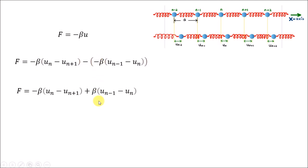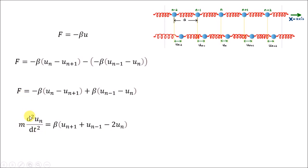Since both forces are opposing each other, we put a negative sign, which makes the expression positive. Working with the expressions, we can apply Newton's second law of motion to write F = m d²u_n/dt². This is a linear second-order differential equation and has plane wave solutions.